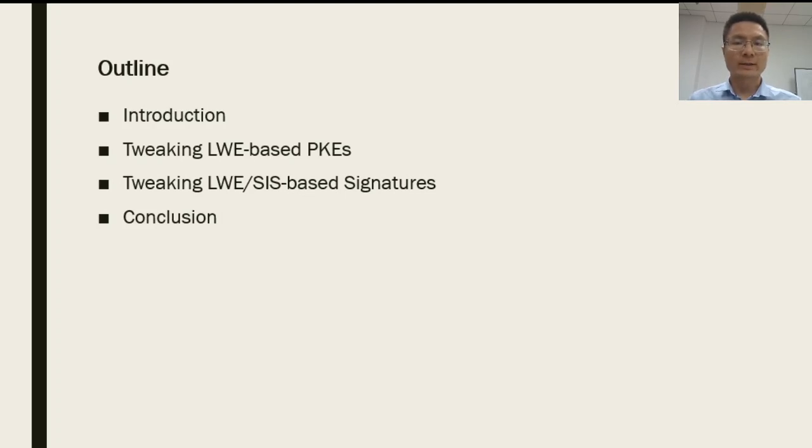This talk has four parts. In the first part, we will give a short introduction. We will show how to tweak the asymmetry in the design of lattice-based public key encryptions and signatures in the second and third parts. Finally, we will end this talk with a short conclusion.